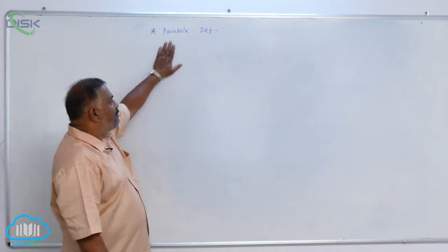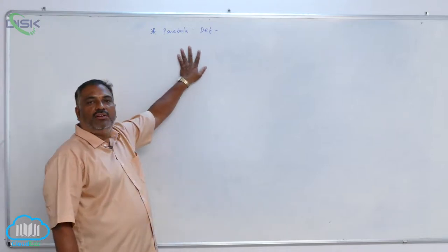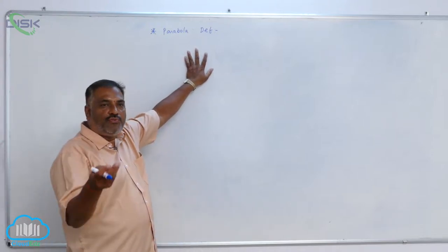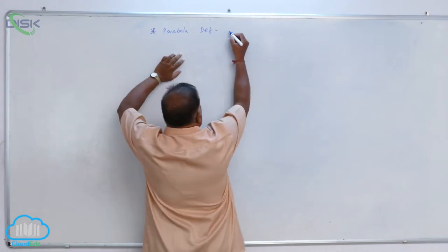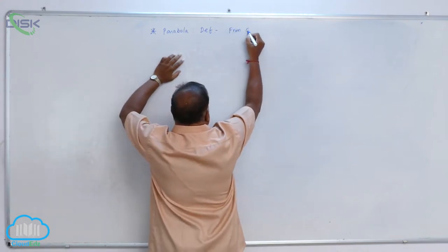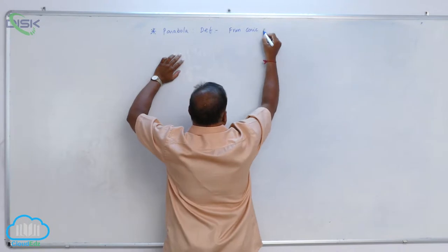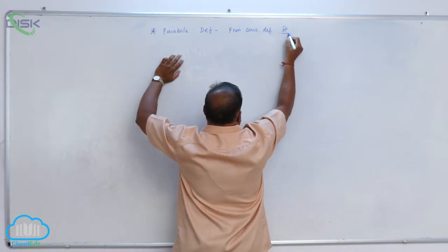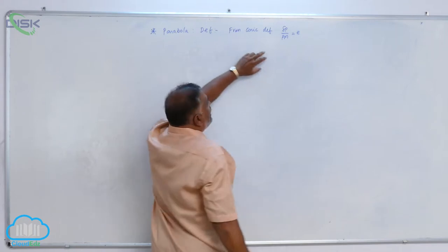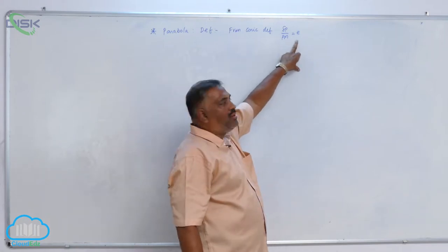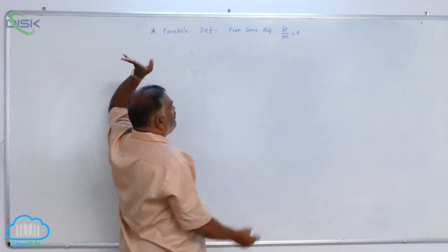Today we will define the parabola and its definition. From the conic definition, SP divided by PM is equal to eccentricity e. In particular, if e is equal to 1, the conic becomes a parabola.